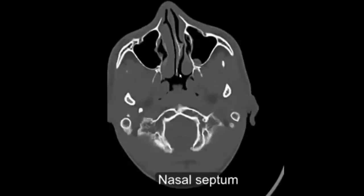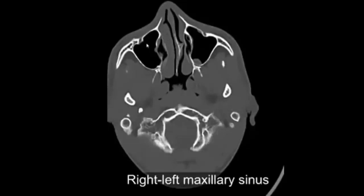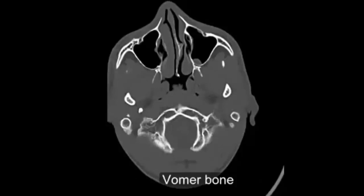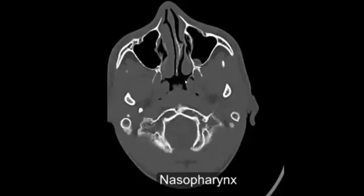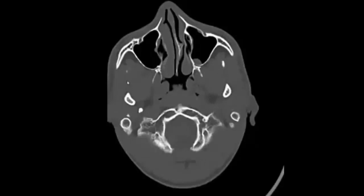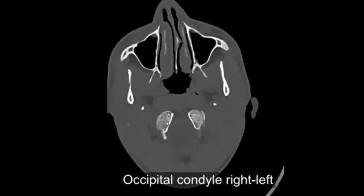Nasal septum. Inferior turbinate, right and left. Maxillary sinus. Infraorbital foramen, right and left. Vomer bone. Nasopharynx. Pterygoid plate. Palatine bone. Mandible. Styloid process. Occipital condyle, right and left.